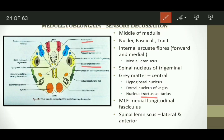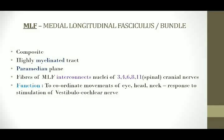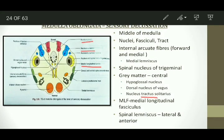This is the medial longitudinal bundle, which is a composite tract of highly myelinated fibres situated in the paramedian plane. The fibres of the medial longitudinal bundle interconnect the nuclei of five cranial nerves. Its function is to coordinate the movements of the eye, head, and neck in response to stimulation of the vestibulocochlear nerve. The other tracts seen here are the lateral and anterior spinal lemniscus, which is a bundle of sensory nerve fibres in the brain stem that terminates in the specific nucleus.